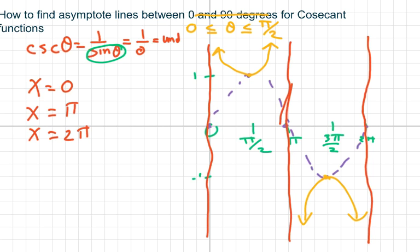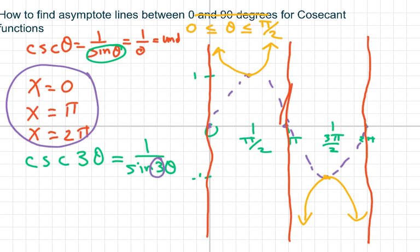So I want to find the asymptote lines for cosecant of 3 theta. We know that the cosecant of 3 theta is merely 1 over sine of 3 theta. So all I have to do is take my asymptote lines here and divide by 3.